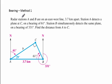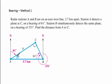Two methods for measuring bearing. Method one is that the angle measure is always measured clockwise from north. So let's assume we have two radar stations at points A and B, located on an east-west line, 3.7 kilometers apart. Station A detects a plane at point C on a bearing of 61 degrees — meaning we rotate clockwise 61 degrees from north to point toward the plane.